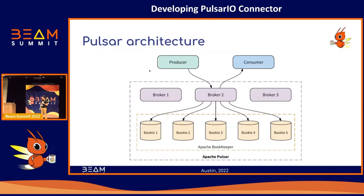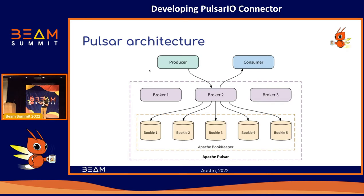What is the Pulsar architecture? At the highest level, a Pulsar instance can be composed of one or more Pulsar clusters. Each cluster is composed of two layers: the first is a service layer comprised of a set of brokers that receive and deliver messages; and the second is a stateful persistent storage layer comprised of a set of Apache BookKeeper nodes, called bookies, where data is stored.